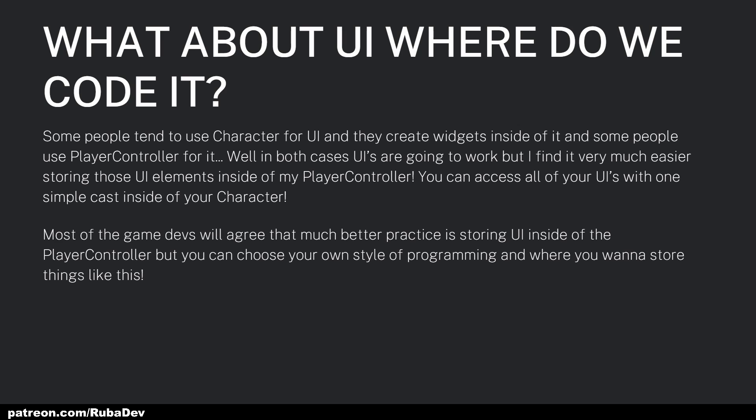Reading forums and Reddit, most game developers agree that storing UI inside the Player Controller is much better practice. But you can choose your own programming style. To keep it simple: if you want every character to be able to jump, put jump into the Player Controller. If you want only a specific character — like a champion — to be able to fly and others not, that input goes inside the specific Character class.